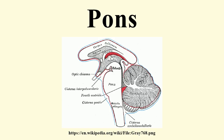Development: During embryonic development, the metencephalon develops from the rhombencephalon and gives rise to two structures — the Pons and the cerebellum. The ala plate produces sensory neuroblasts, which give rise to the solitary nucleus and its special visceral afferent column, the cochlear and vestibular nuclei, which form the special somatic afferent fibers of the vestibulocochlear nerve, the spinal and principal trigeminal nerve nuclei, which form the general somatic afferent column of the trigeminal nerve, and the pontine nuclei which relay to the cerebellum.